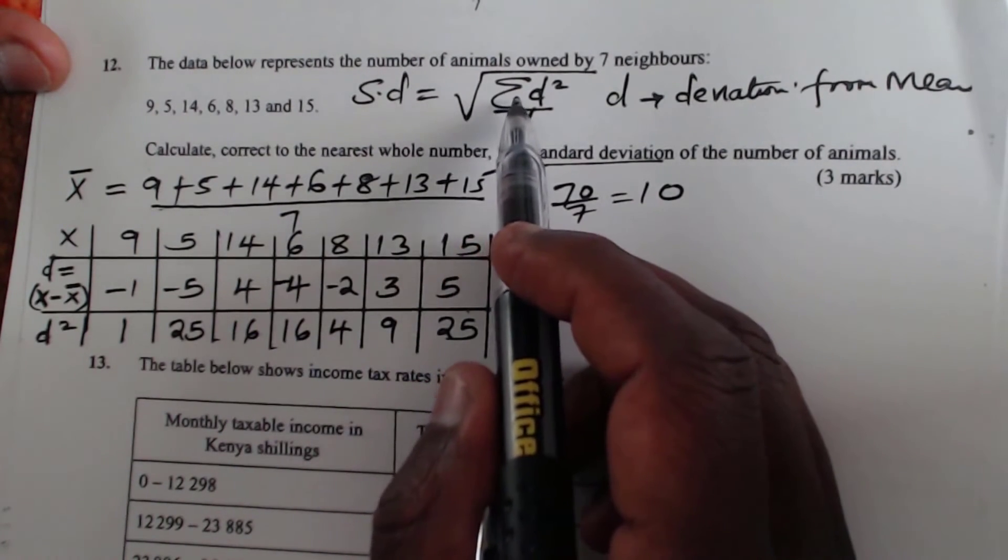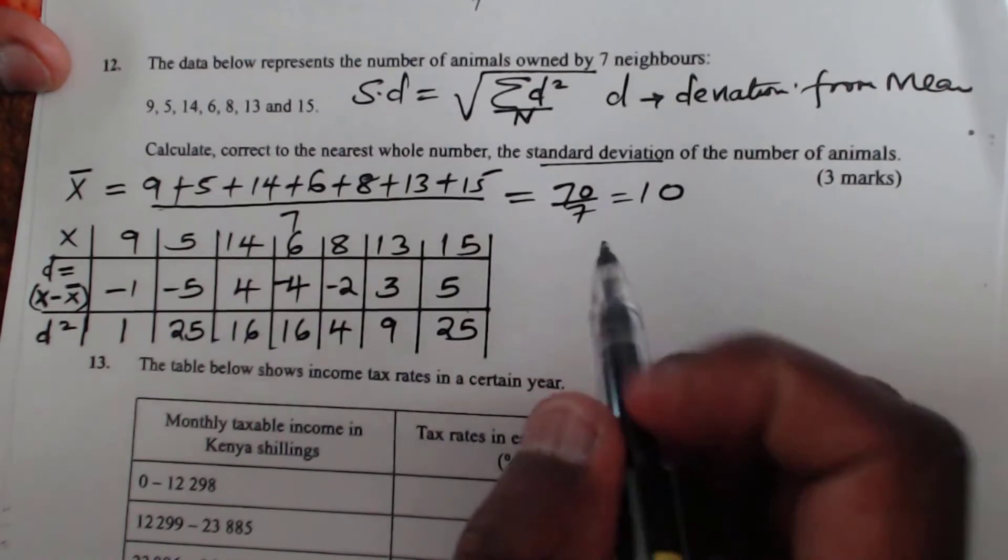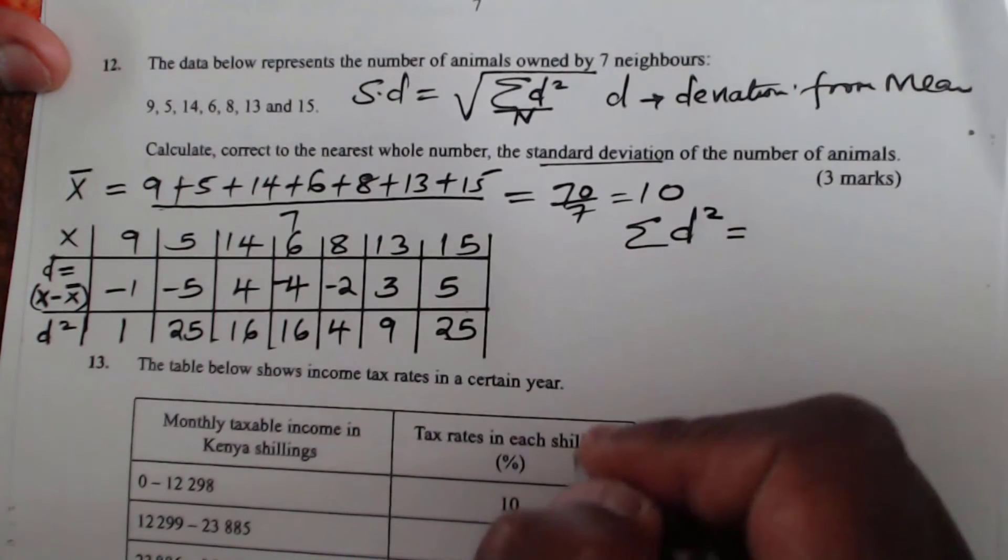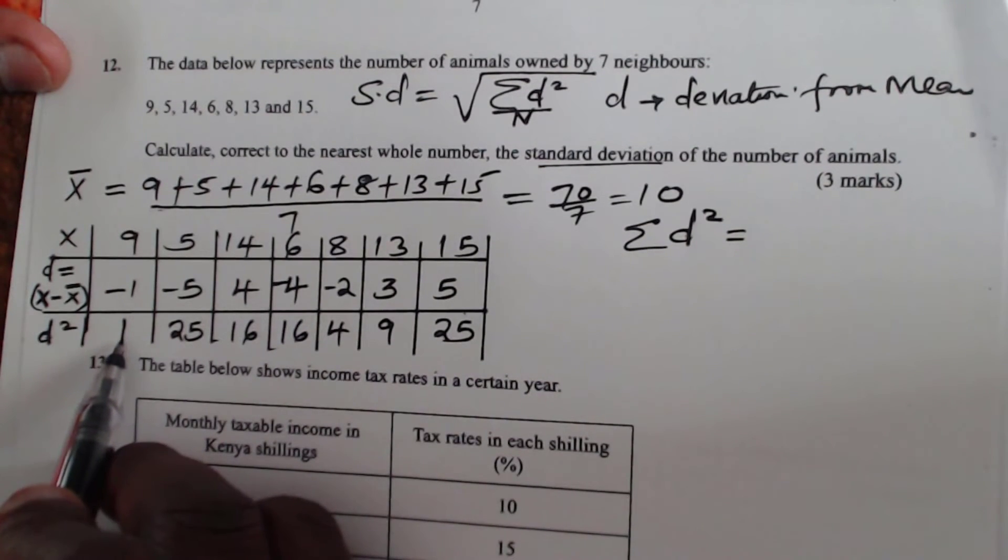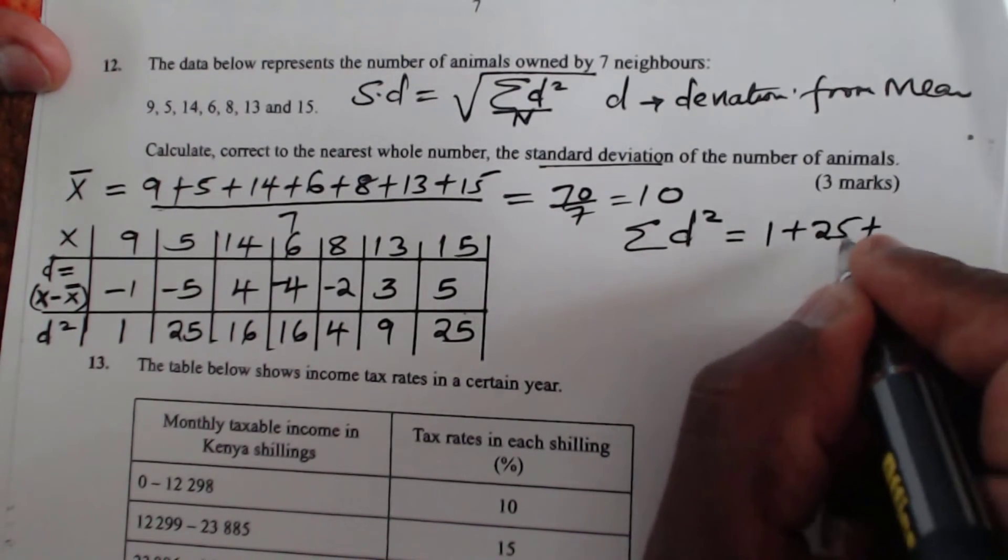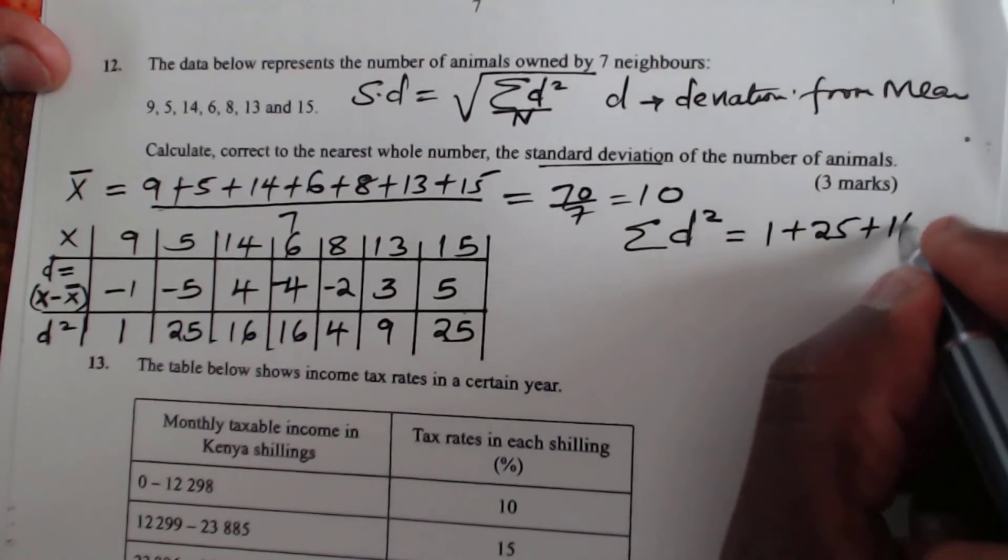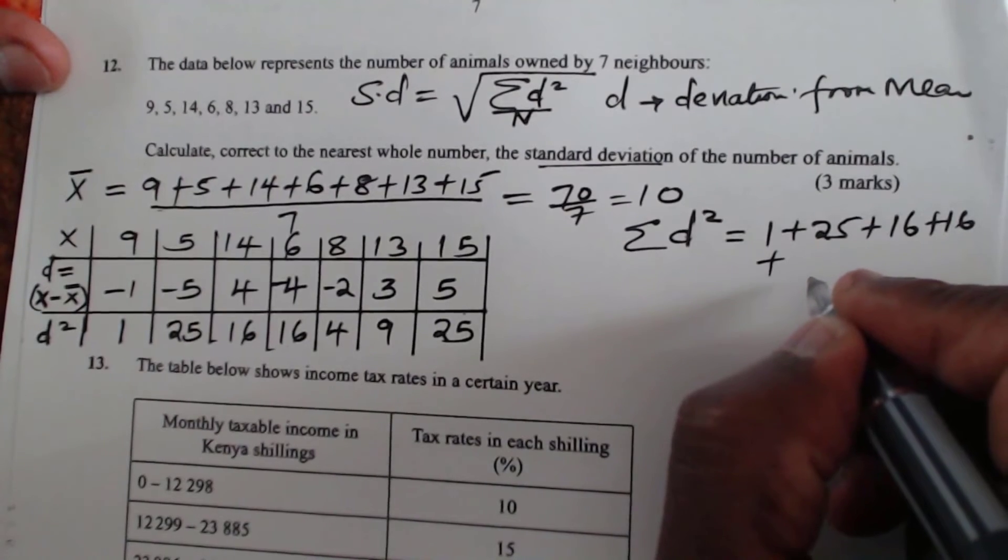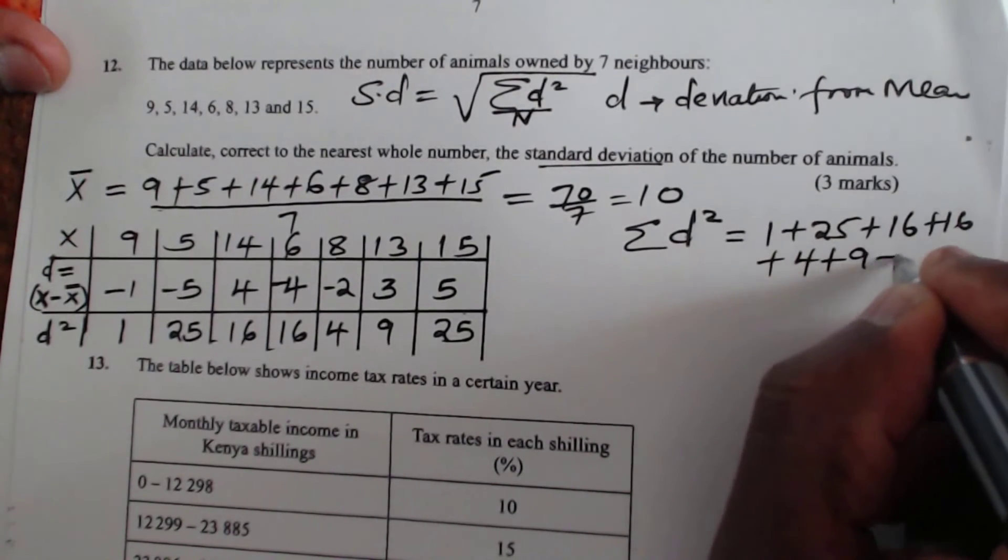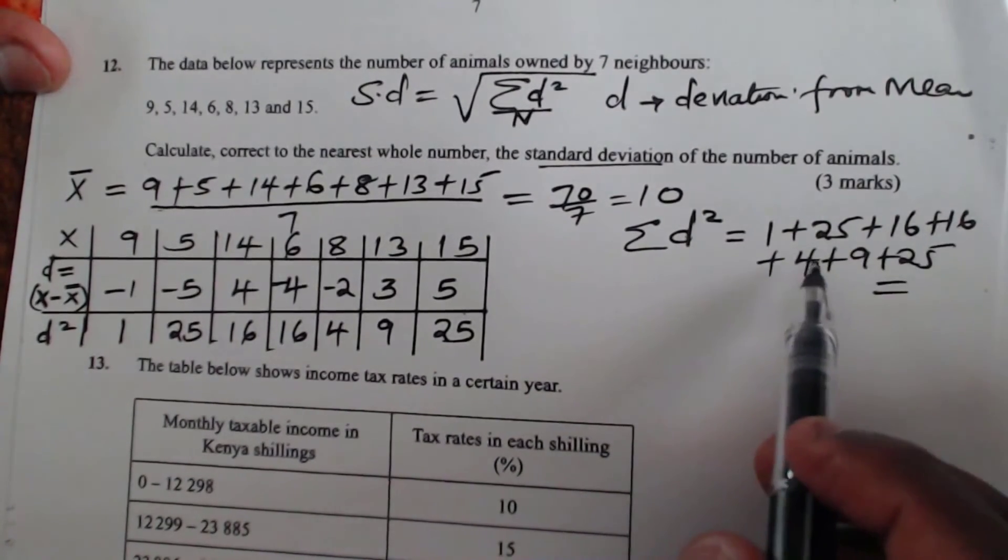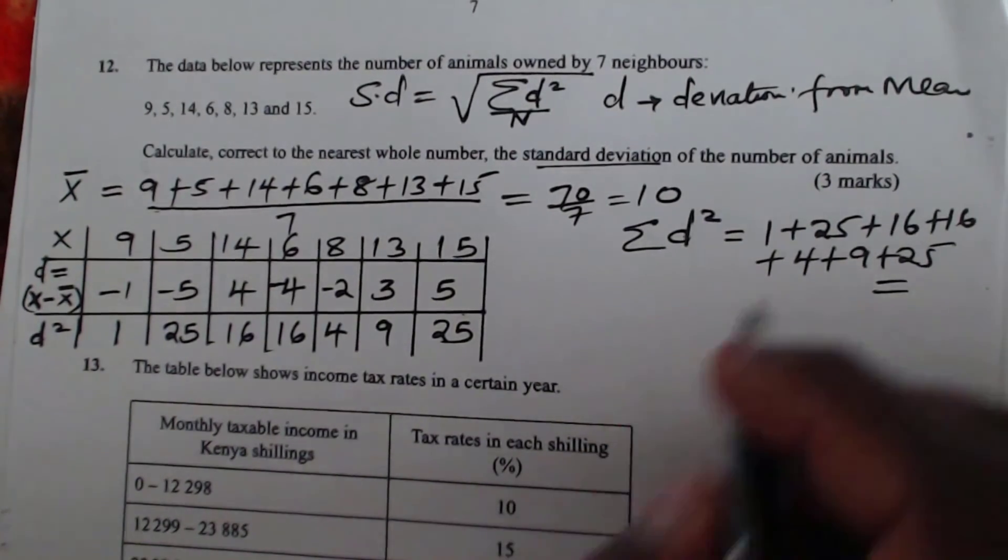We need to get the summation of D squared. So we have to add everything here: 1 plus 25 plus 16 plus 16 plus 4 plus 9 plus 25. When you add everything, you get 96.